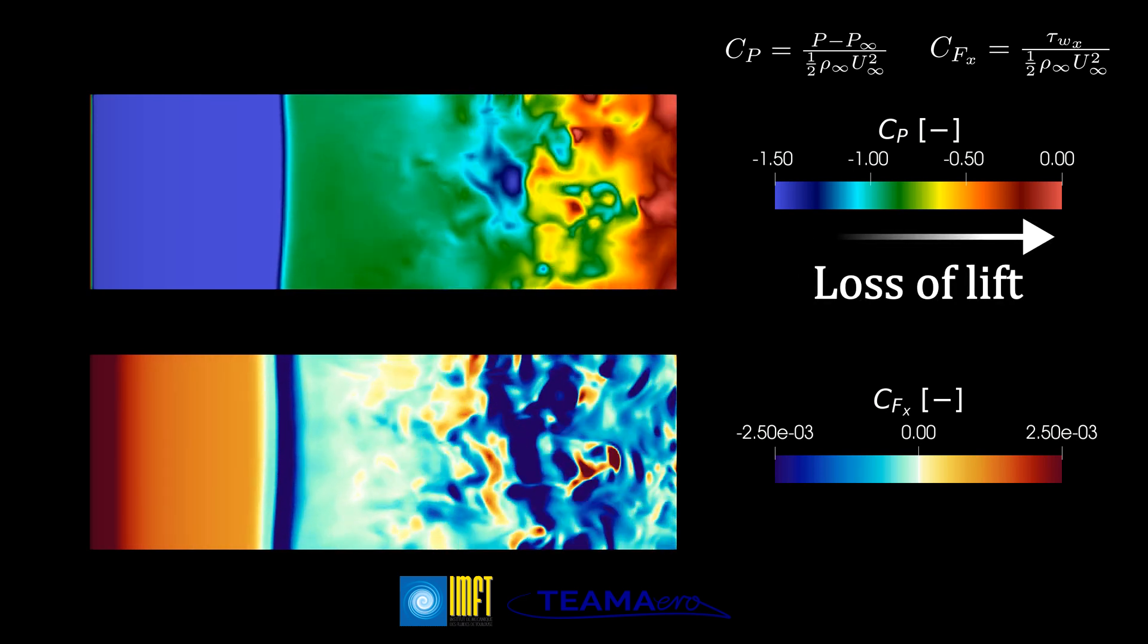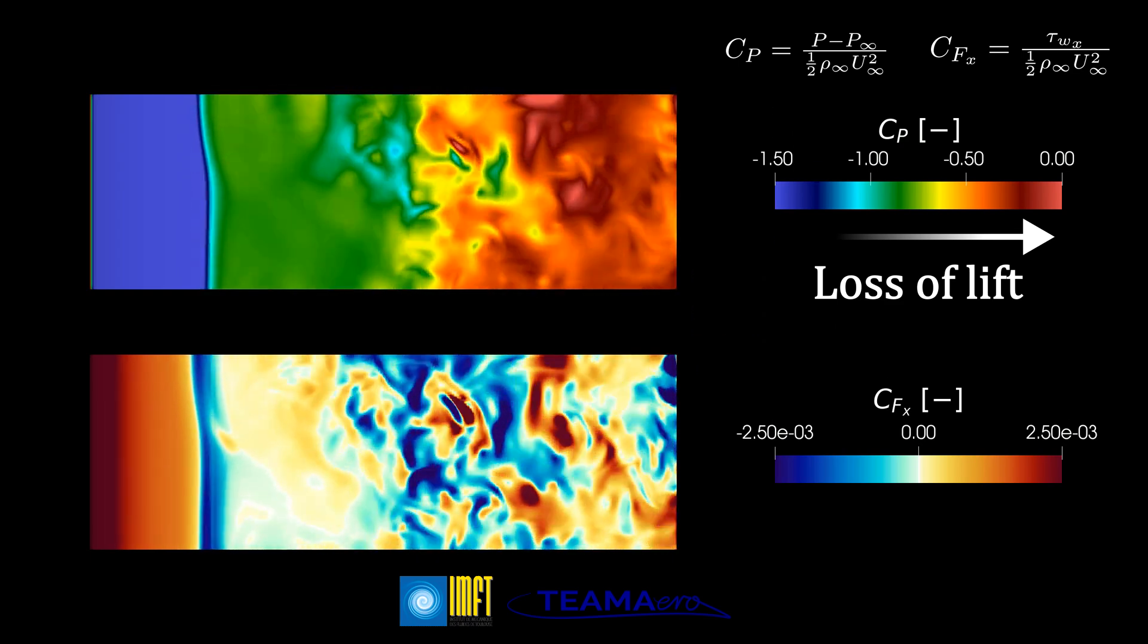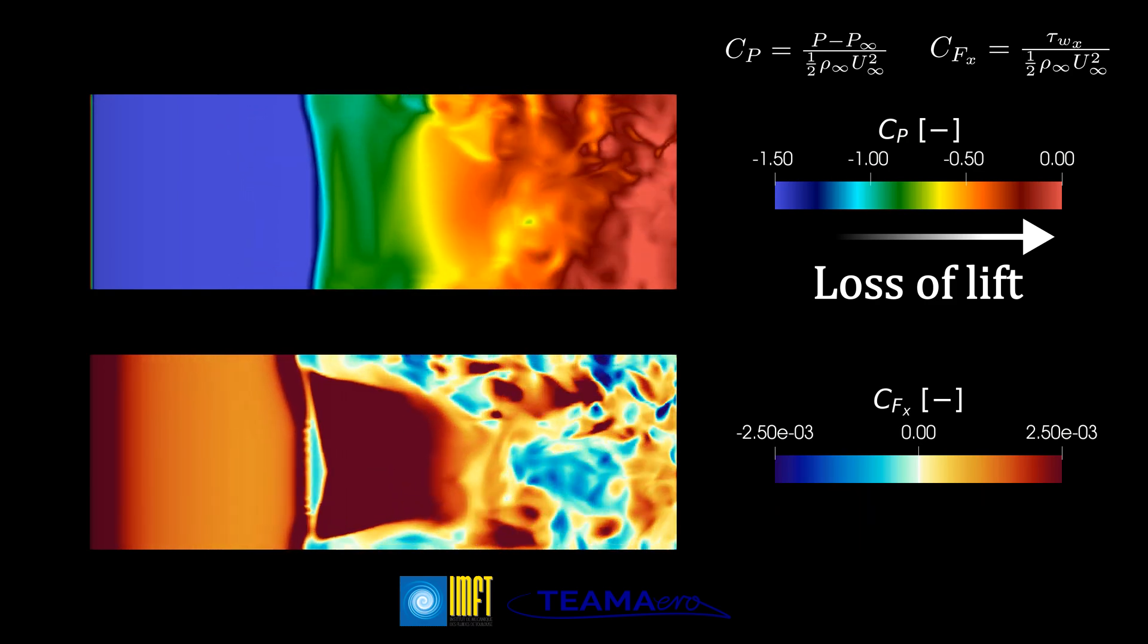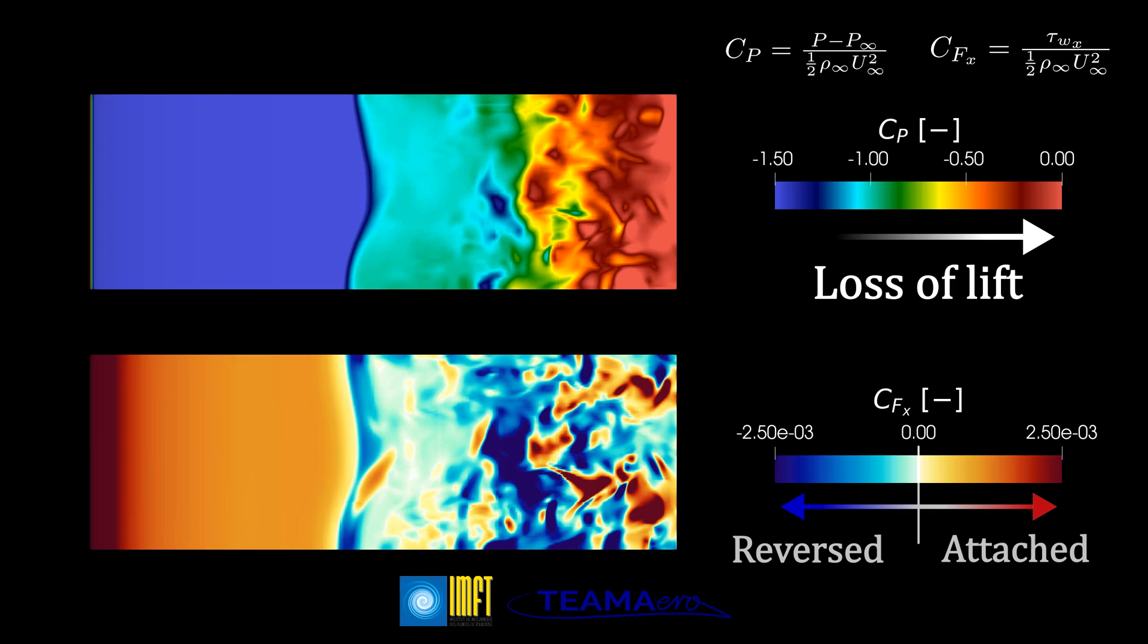As I explained before, the distribution of the pressure coefficient gives us information about the magnitude and distribution of the lift over the wing. As it increases, the levels of suction decrease and therefore there is a loss in lift.